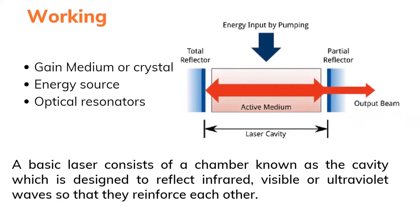Now we'll study the working of a laser. You may have seen lasers in movies like Star Wars or Iron Man — beams of compressed energy. In the working diagram, we can see an active medium, a laser cavity, an output beam which is our laser, and reflectors — a total reflector and a partial reflector. The three most important parts are the gain medium or crystal, an energy source, and optical resonators.